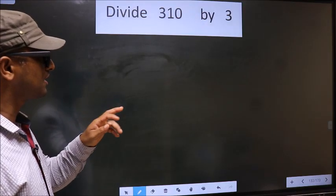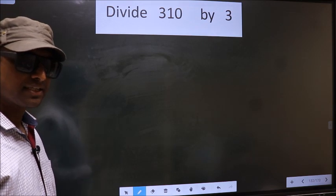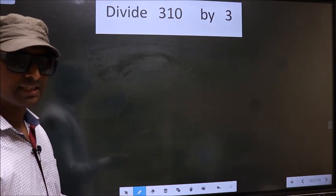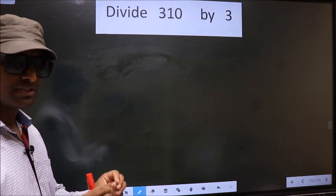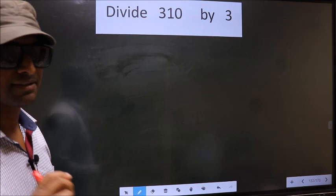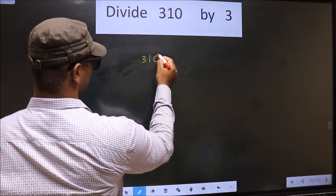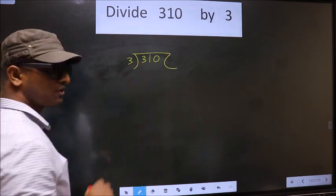Divide 310 by 3. While doing this division, many make a mistake. What is the mistake that they do? I will let you know. But before that, we should frame it in this way. That is 310 divided by 3 here.